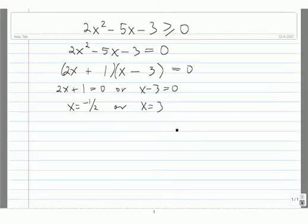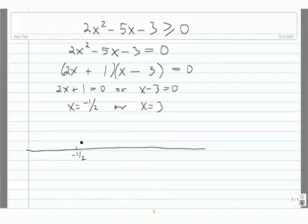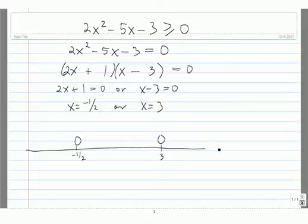So we plot these two values on the number line. We have negative 1 half over here — we put a 0 up there to denote that the function is 0 there — and we put a 3 here, again using a 0 to denote that the function 2x squared minus 5x minus 3 is equal to 0 there. What we're doing with this number line is classifying everywhere where 2x squared minus 5x minus 3 is either positive, negative, or 0. These are the two places where it's 0, and now we need to see where it's positive and negative.